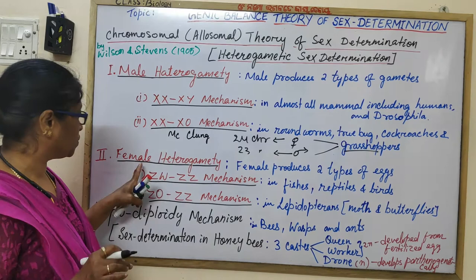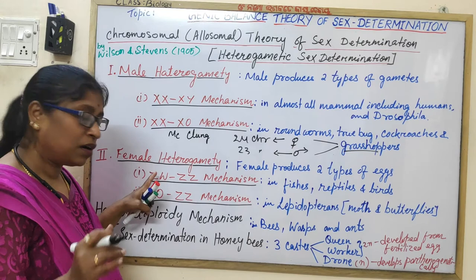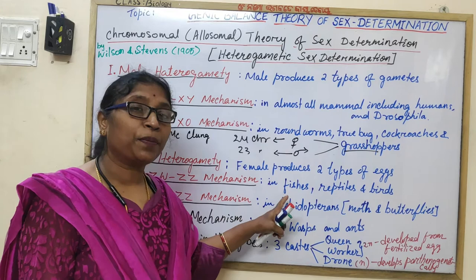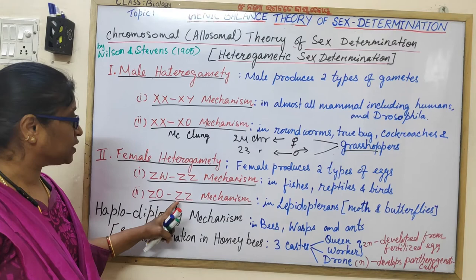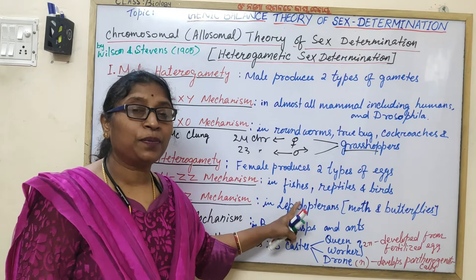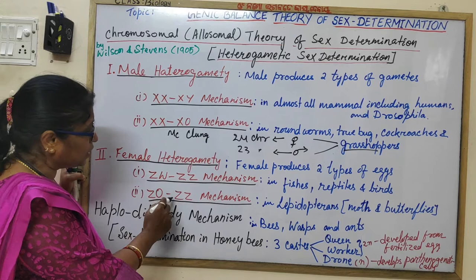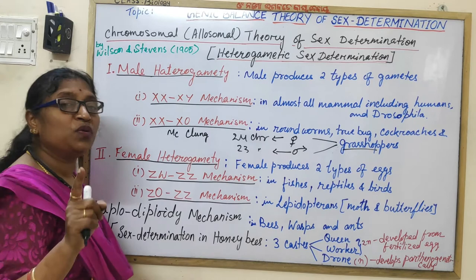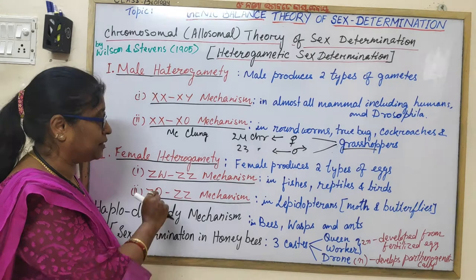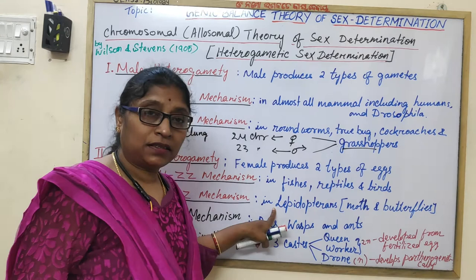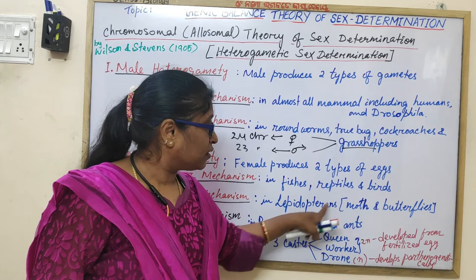Chromosome has a special role in the determination of sex of the offspring. Under female heterogamity, the female produces two types of gametes. There are two mechanisms: ZW/ZZ and Z0/ZZ. The ZW/ZZ mechanism is seen in vertebrates like fishes, reptiles, and birds, where females produce two types of eggs: A+Z and A+W. The Z0/ZZ mechanism is seen in Lepidoptera — moths and butterflies — where the W sex chromosome is lacking in females.